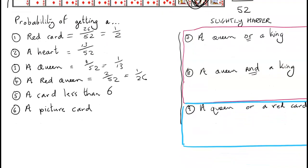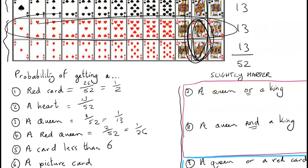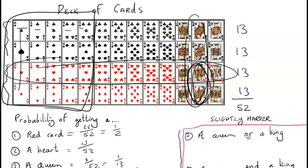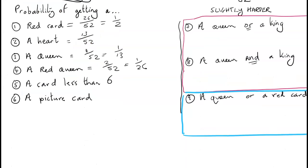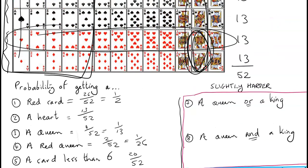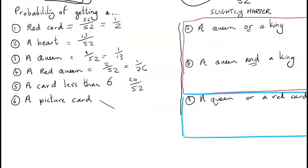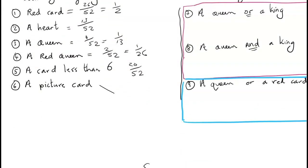A card less than 6: that includes ace through 5 — cards 1, 2, 3, 4, 5 — and there are 4 of each, so 20 out of 52. And finally, a picture card: there are 12 face cards in the deck, so the probability is 12 out of 52.